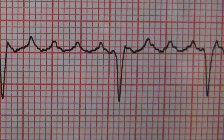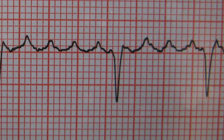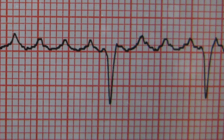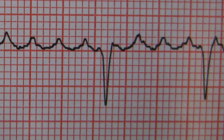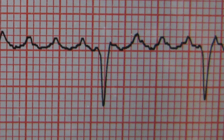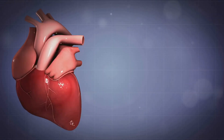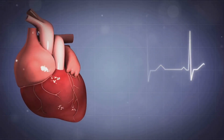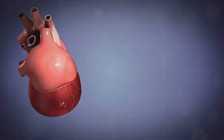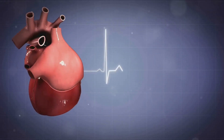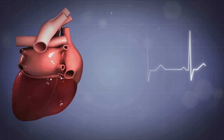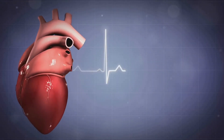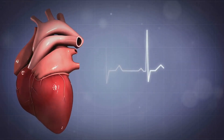Atrial flutter involves a rapid but regular beating of the atria and is characterized by sawtooth flutter waves preceding each QRS complex on an EKG. Atrial enlargement, often associated with conditions like hypertension and valvular heart disease, can be observed as changes in the P wave morphology and duration on an EKG, indicating altered electrical activity in the atria.